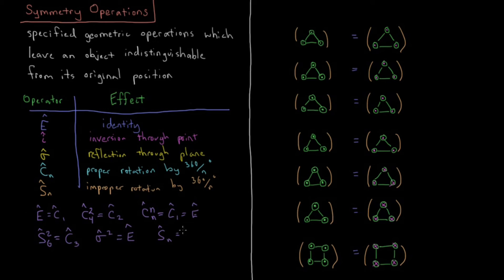So the SN operation, as I said, is you have CN followed by a sigma, which is perpendicular to that CN axis. So S itself is actually already a compound operation. It's a product of a CN and a perpendicular sigma.